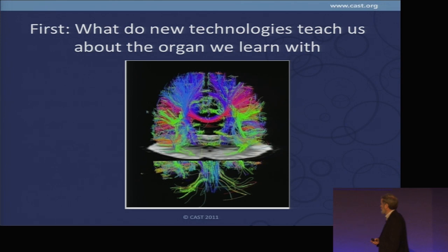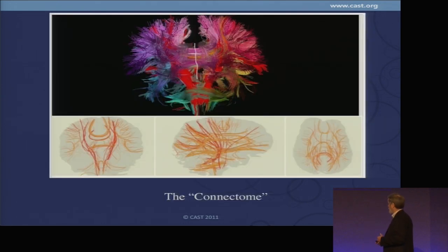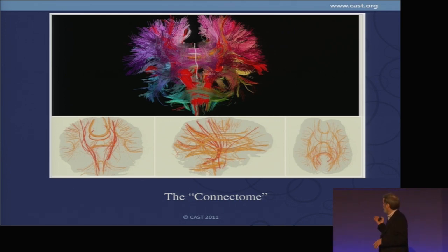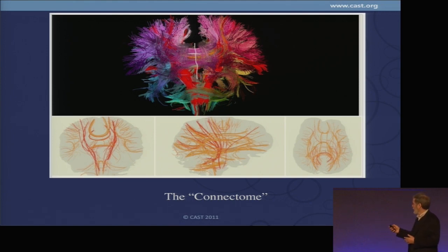I want to talk about the neuroscience. You've seen gorgeous images that allow us to see the nervous system in ways we never saw before. You may have heard this word in the press: the connectome. What has become a central focus of neuroscience research is studying the connections — what's connected to what in the nervous system — and that's called the connectome.